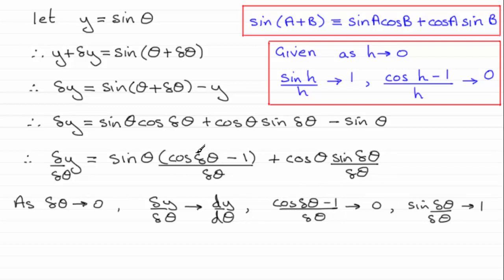So what we've got here is this tends to 0 and sine theta multiplied with 0 is 0. And this result here is 1. So cosine theta times 1 is cosine theta.